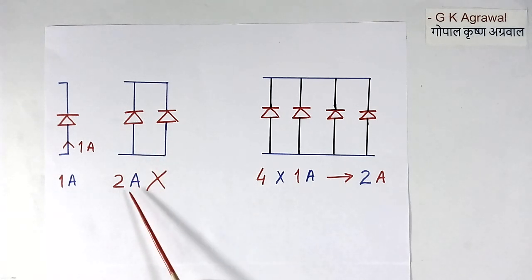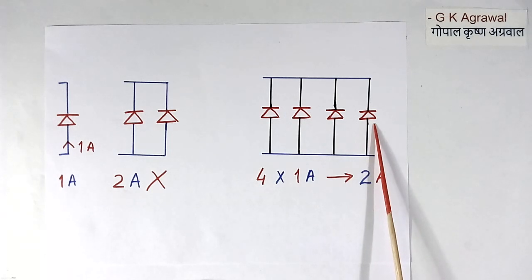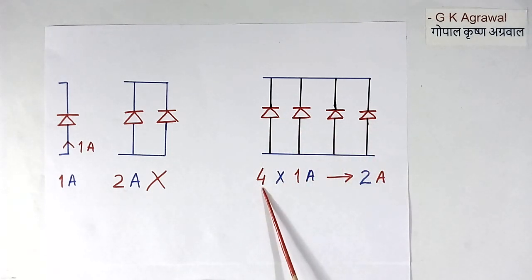Okay. Now if you want 2 ampere using 1 ampere diode, you will have to connect say 4 diodes in parallel. This is based on my experience. So by connecting 4 diodes at 1 ampere each, you will get only total 2 ampere above.